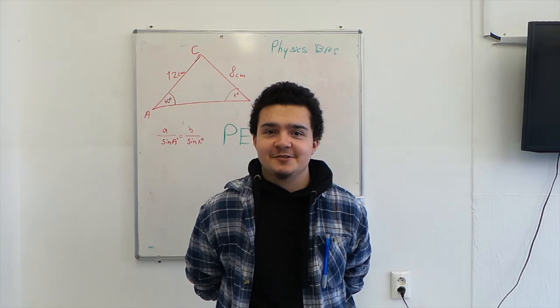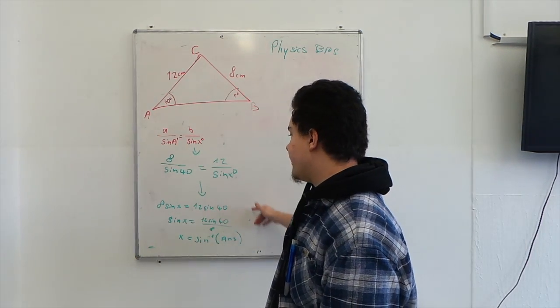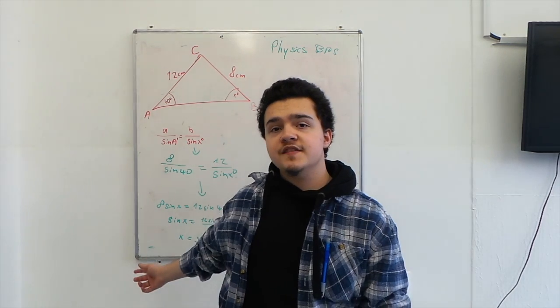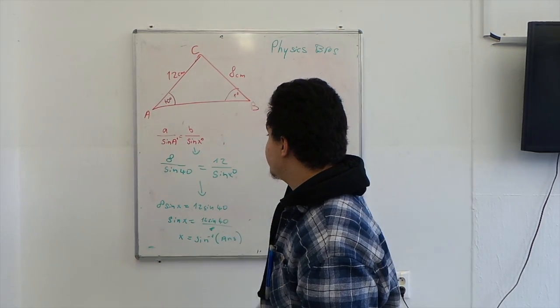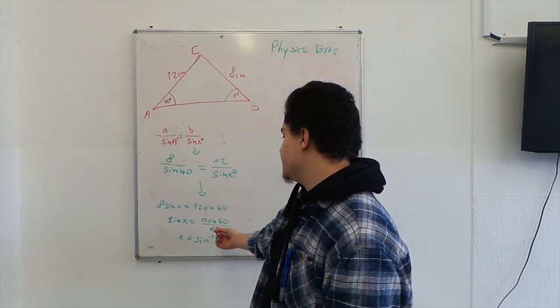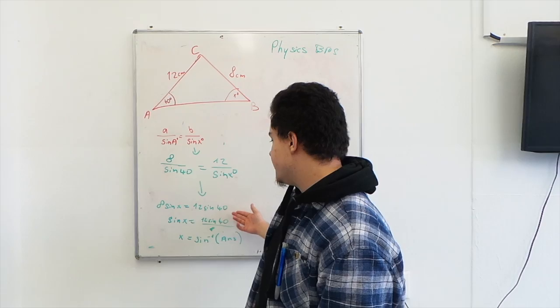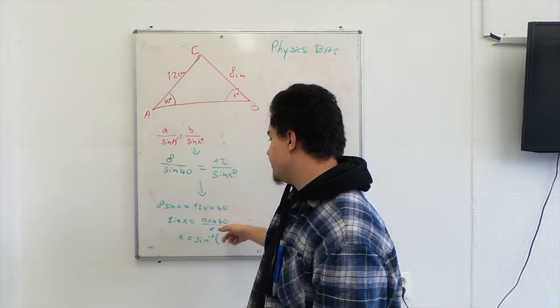So, let's get into it. Here we have an example of the sine rule where you have a lot of functions happening at once, and obviously to a normal human being I see something like this where I have sine x equals 12 sine 40 over 8. Logically I just do 12 sine 40 over 8.